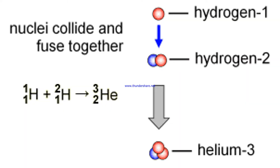We already know that helium is made when hydrogen nuclei are fused together, so we should be able to work out how the rest of the elements are made. The only problem is that to fuse any other elements, we need a lot more energy — at least a hundred million degrees Celsius and practically incomprehensible pressure. But the only time that much energy exists is at the end of a star's life.